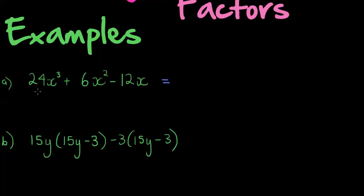I just ask: what's the greatest number that can divide all of the constants? For example, 24, 6, and 12 — I start with the smallest one because I can't choose anything bigger than that. 6 can divide itself, 6 can divide into 12, and 6 can divide into 24, so 6 is a common factor.